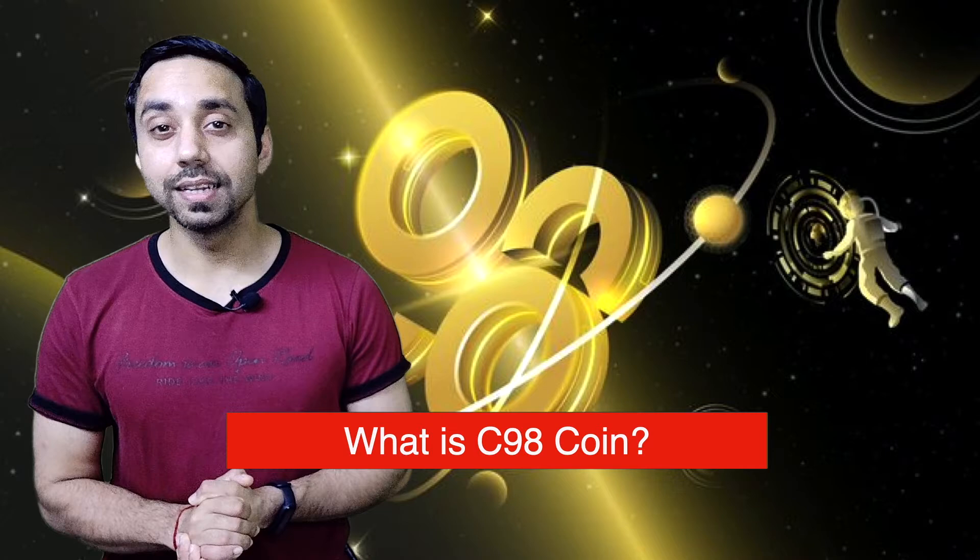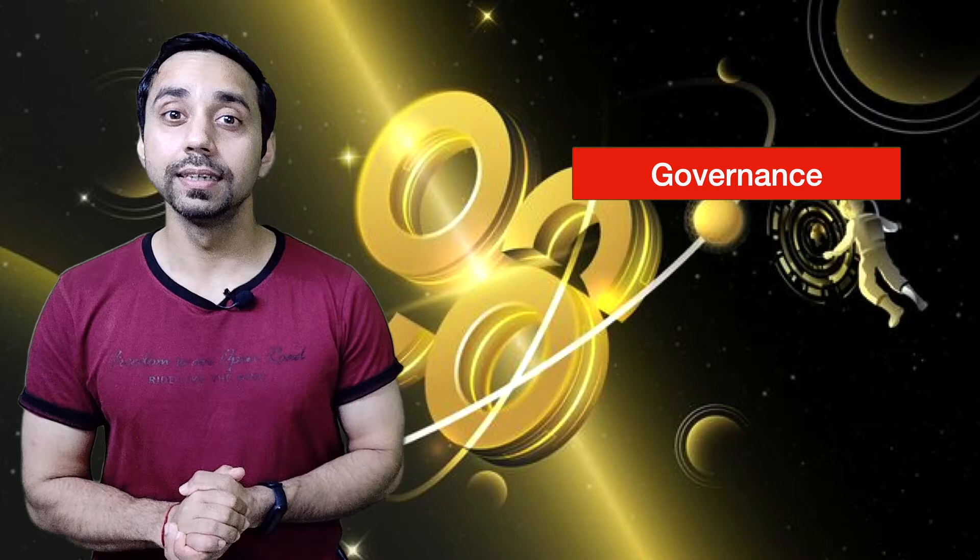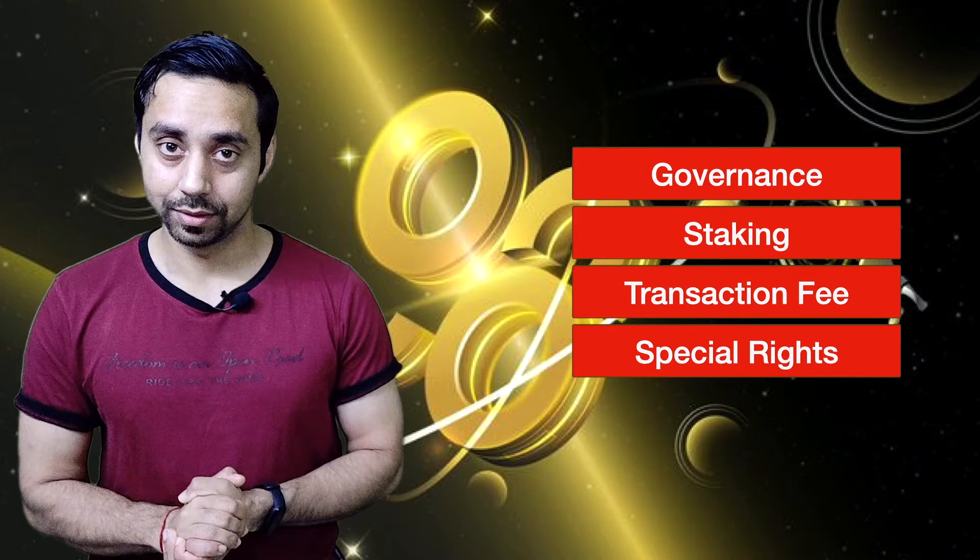Now next, I will talk about C98 coin. C98 is a native token or you can call it as a utility token of Coin98 ecosystem. It has a following set of utilities that ranges from governance, staking, transaction fee, and finally special rights. To start with, we have governance. So governance gives the token holder right to vote on key proposals that can shape the direction of the project.